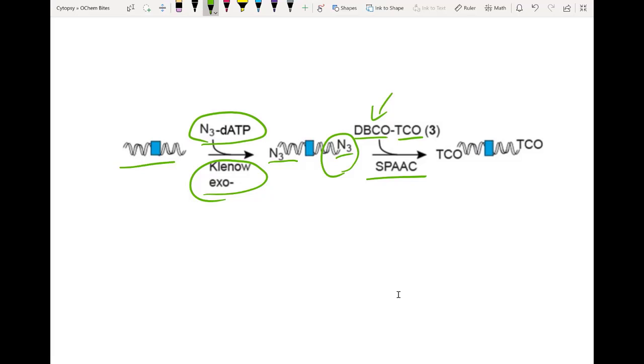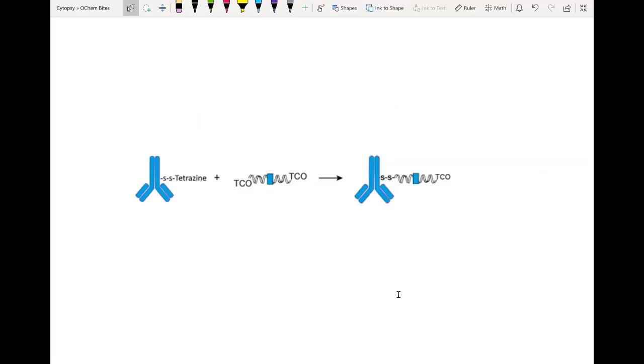The PEG linker in between the two of these, which is just a little dash here, will help make sure that steric hindrance isn't as much of a problem and the final product is shown here. It's DNA with two transcyclo-octenes which you can use to react with the tetrazine, and that's the next step.